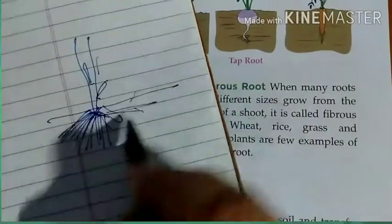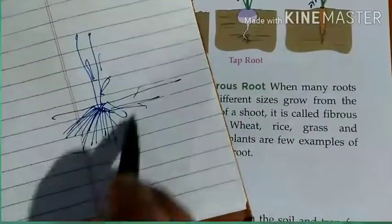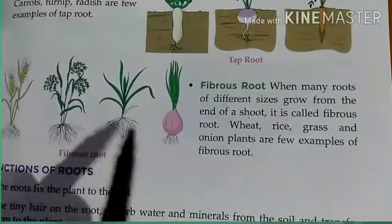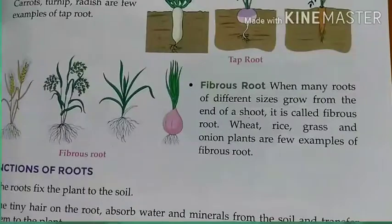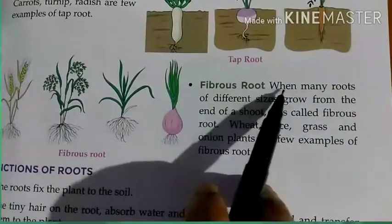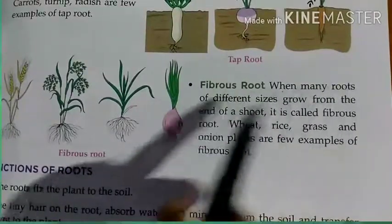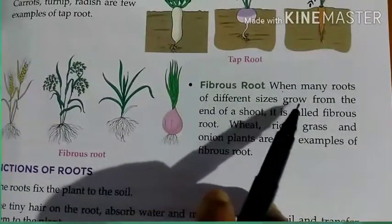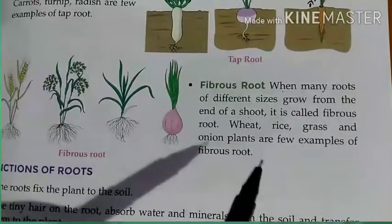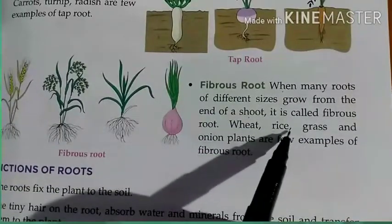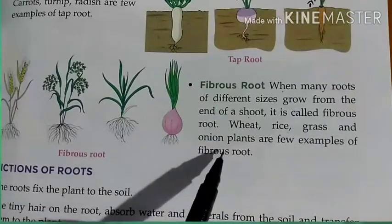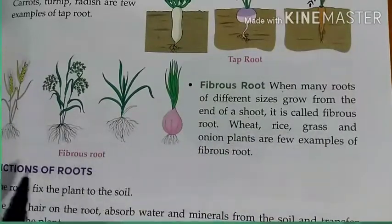This type of root system is called fibrous root. When many roots of different sizes grow from the base of the stem, it is called fibrous root. Examples of fibrous root are wheat, rice, grass, and onion plants.